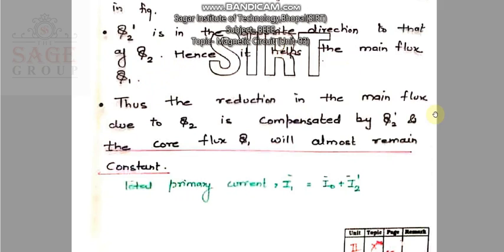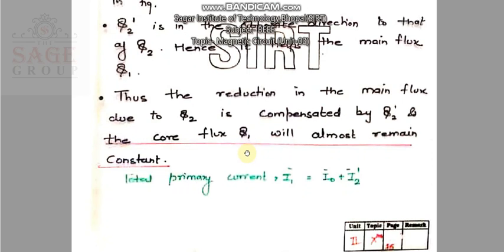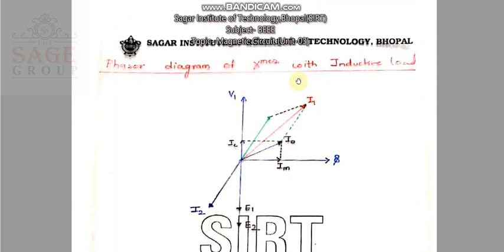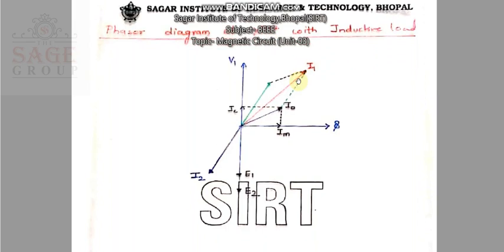Since I2 dash is in the opposite direction to phi 2, it helps the main flux phi 1. Thus the reduction in the main flux due to phi 2 is compensated by phi 2 dash, and the core flux phi 1 will almost remain constant. So we can say that I1 equals I0 plus I2 dash.